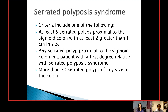There is an entity called serrated polyposis syndrome, and to diagnose it, one of the following criteria must be met: at least five serrated polyps proximal to the sigmoid colon with at least two greater than one centimeter in size; or any serrated polyp proximal to the sigmoid colon in a patient with a first-degree relative with serrated polyposis syndrome; or more than 20 serrated polyps of any size throughout the colon.